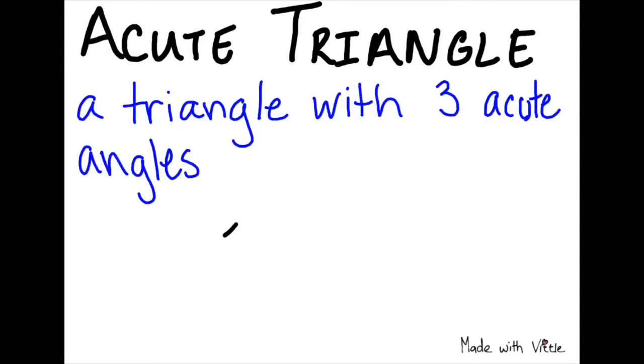Our first type of triangle that we are going to talk about is called an acute triangle. Acute triangles are triangles that have three acute angles that measure less than 90 degrees.